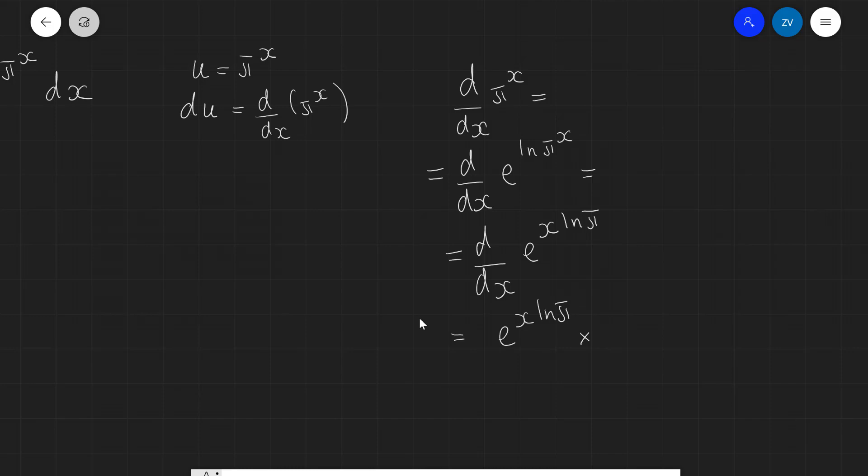So if I was to differentiate x ln π, d/dx of that, this will of course be just equal to ln π. So by the chain rule, this will just be equal to ln π.